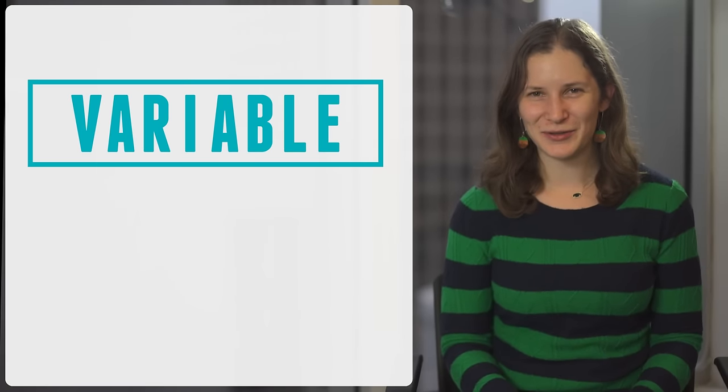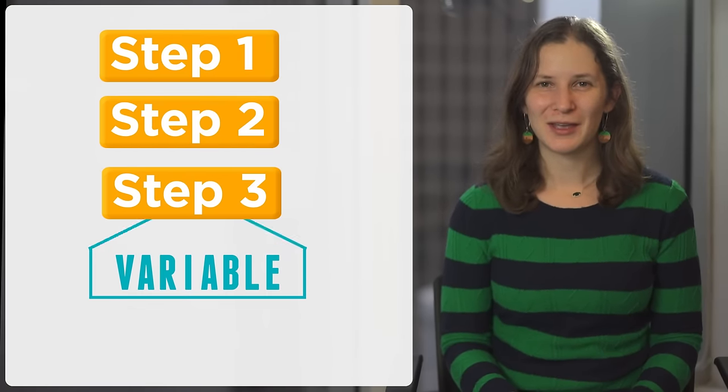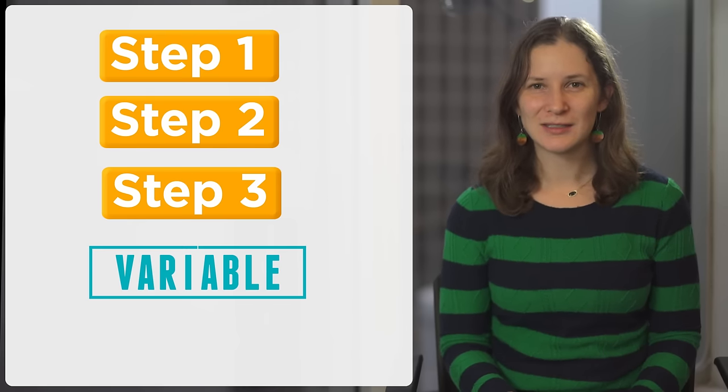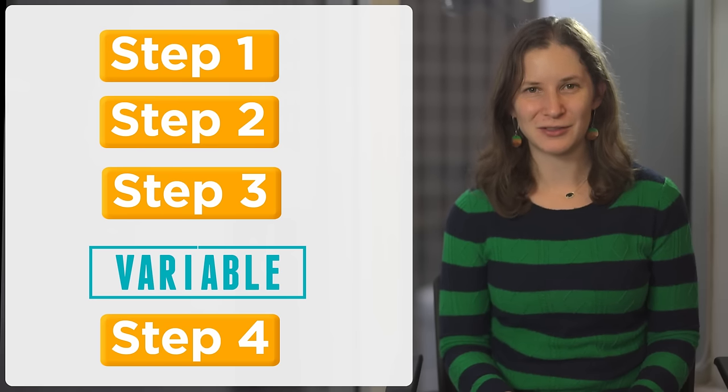A variable is a container that you can store a value in. When you use that variable in an algorithm, it opens up the container and looks at the value inside. This lets you write smarter algorithms that behave differently depending on the value stored in the variable.